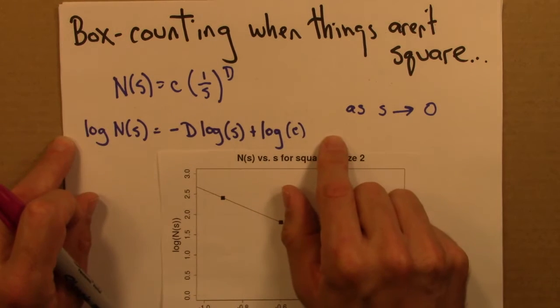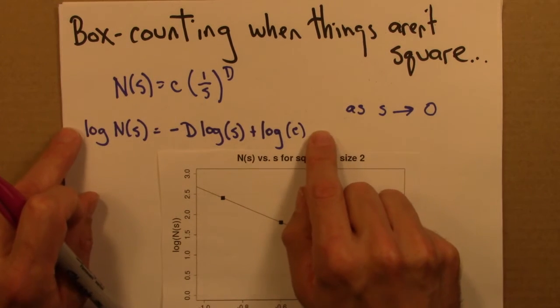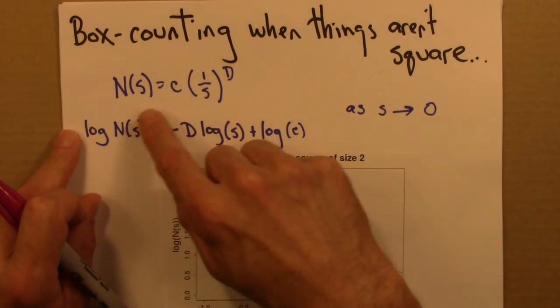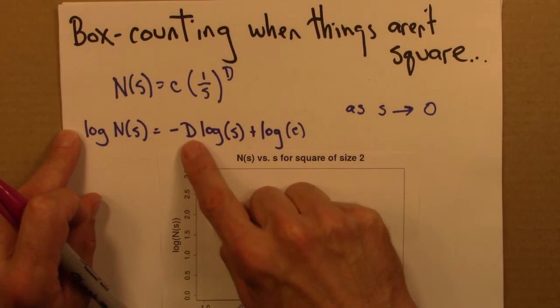We can take the logarithm of this equation, simplify a little bit, and come up with this. And this is the thing that we plot, and we would expect to see a straight line. This is the equation for a line, and the slope is minus d.